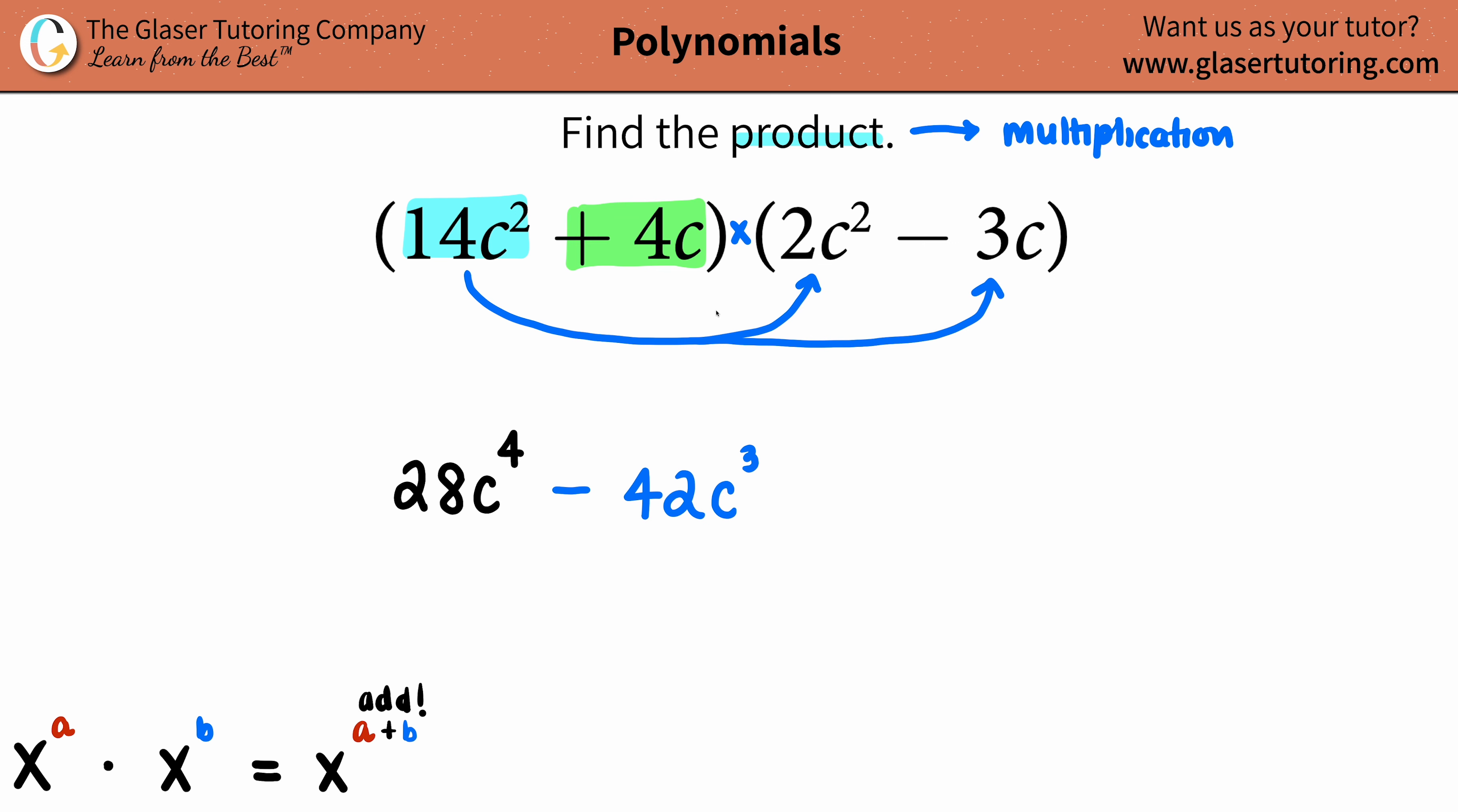Now we're going to focus all of our attention on this positive 4c, and we must do the same exact thing because we got to be fair with the other one. We're going to take that positive 4c and multiply it by 2c².